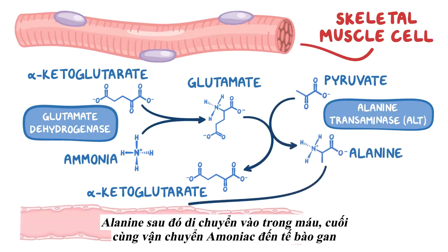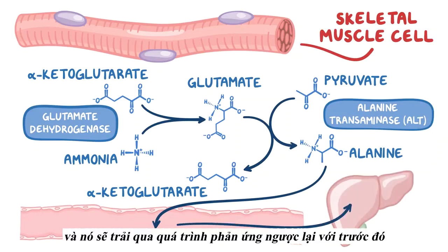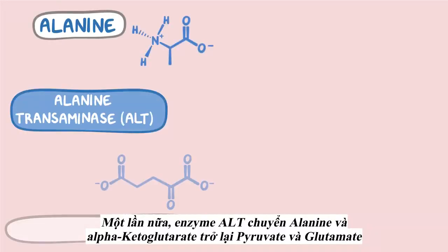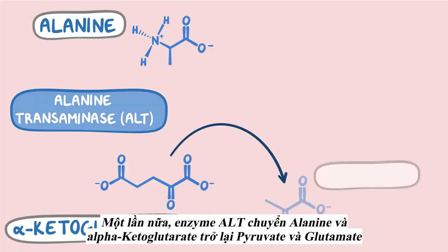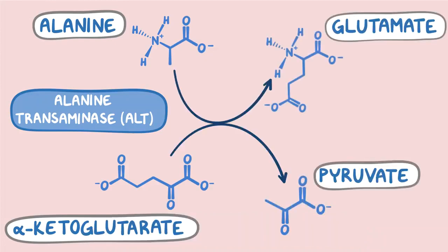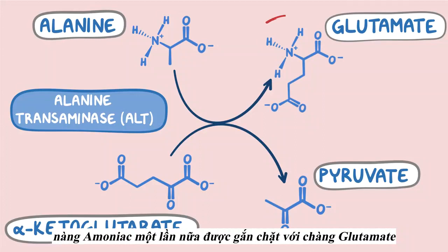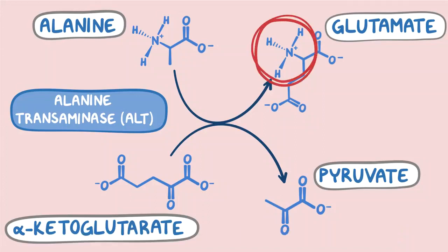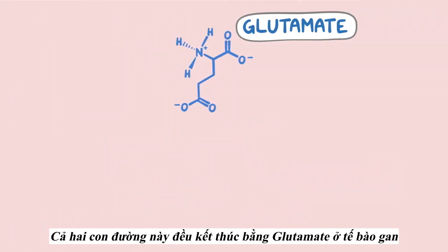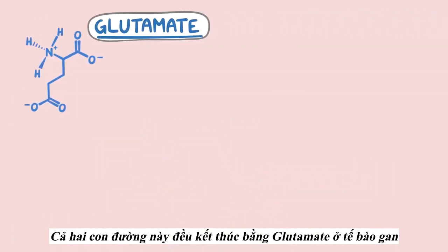Alanine then moves into the blood and ends up transporting ammonia to a liver cell. And once there, it undergoes the reverse of the previous reactions. The enzyme alanine transaminase converts alanine and alpha-ketoglutarate back into pyruvate and glutamate. At this point, the ammonia is now part of glutamate once again. These two pathways both end up at the same point in the liver cell, in the form of glutamate.